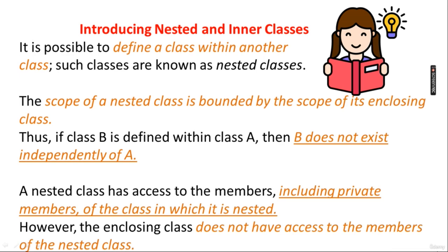The nested class gets access to the members, including private members, of the class in which it is nested. So the inner class will always have access to all members, including private members, of its outer class. However, the enclosing class does not have access to the members of the nested class — the outer class does not have access to the members, including private ones, of the inner class.